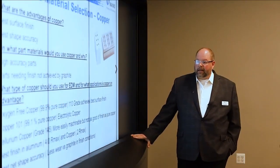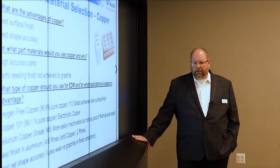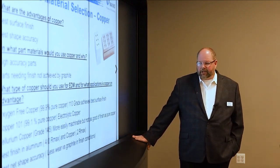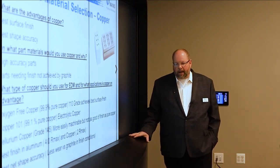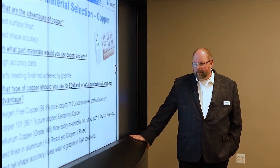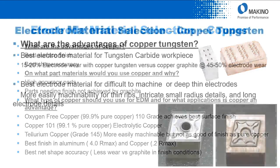Copper is also used for aluminum parts. In aerospace, they're generally looking for high-end finishes, and we can get down to 4R max or 0.2R max in copper. So if you're looking for the best-looking part, best accuracy, and best surface finish, copper is definitely your electrode material.